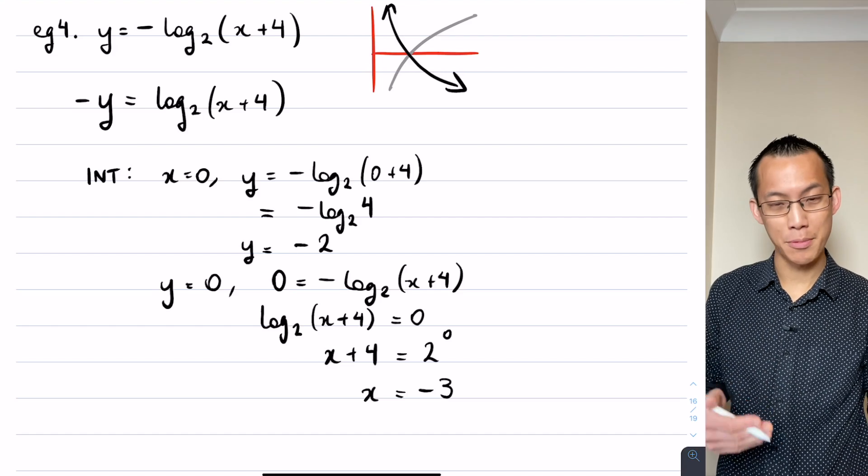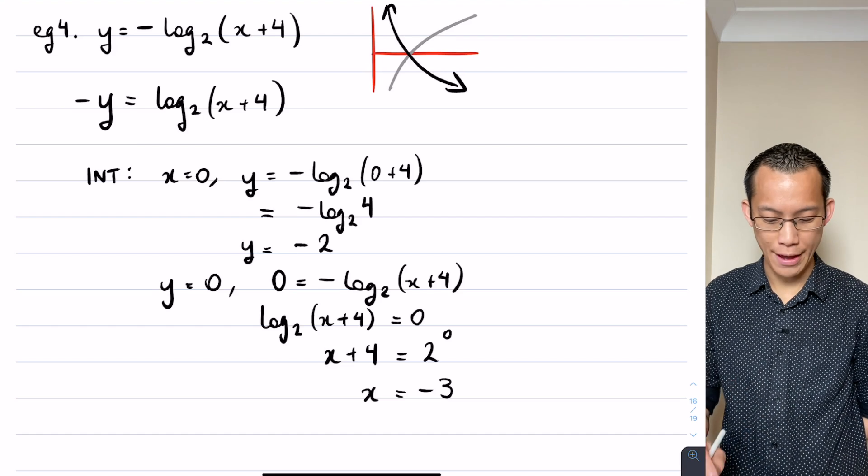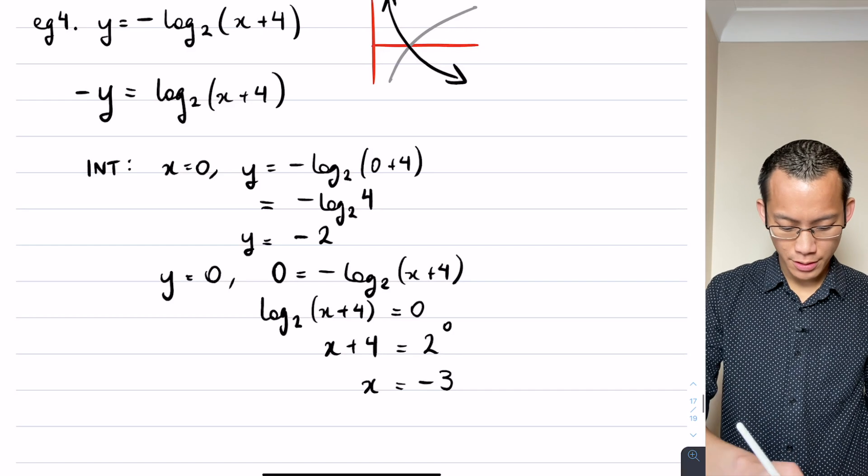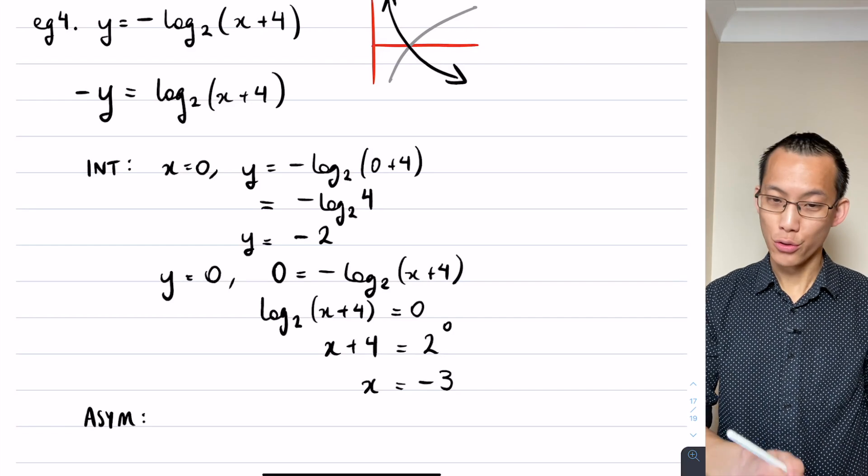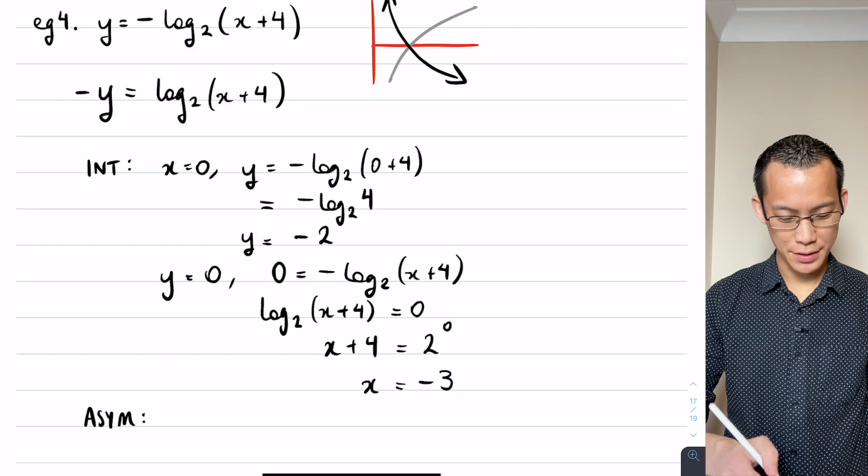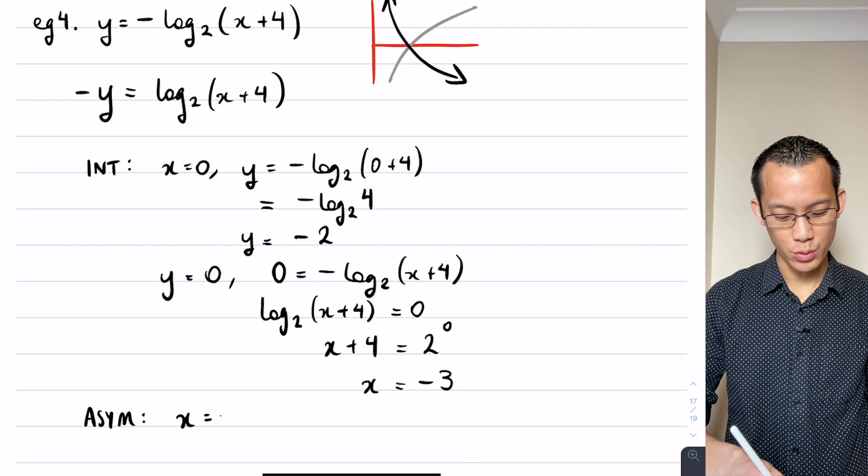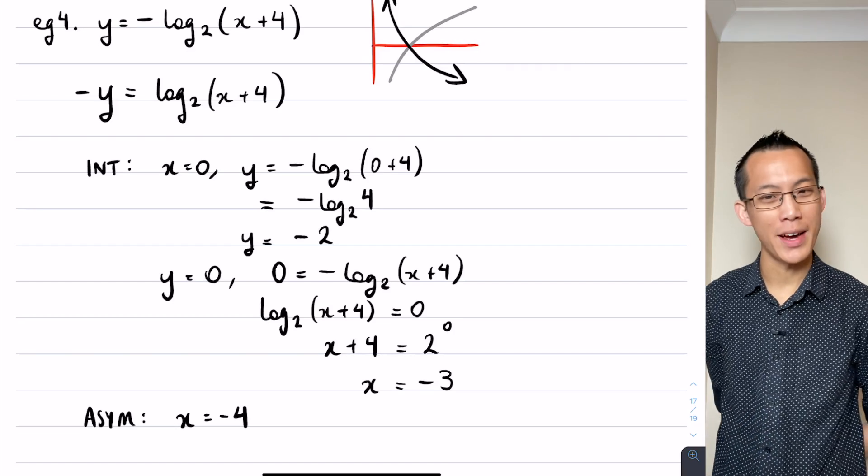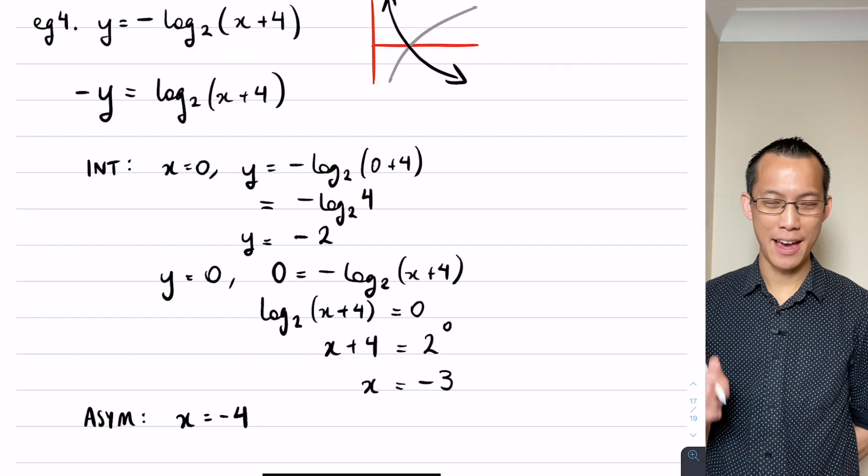Okay, because it's moved that far. Asymptote needs to be there as well. The asymptote is normally at x equals 0, but I've moved it four units to the left, so therefore it's at x equals negative 4. Do I need a point for scale? No I don't, because I have two intercepts, so I've got all the information that I need.